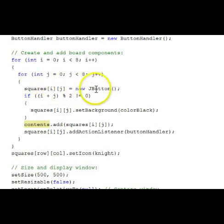Squares ij, we instantiate a button for that array slot. And then, if we look at the sum of i and j modulus 2, the remainder upon division by 2, if that's not equal to zero, that is where we want our black cells to be.